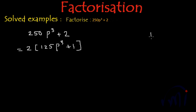125 is actually equal to 5 multiplied by 5 multiplied by 5, that means 125 is actually 5³.